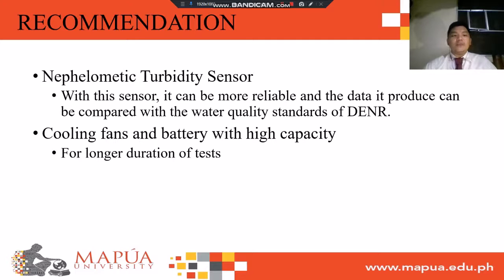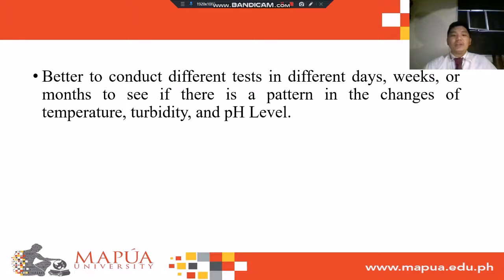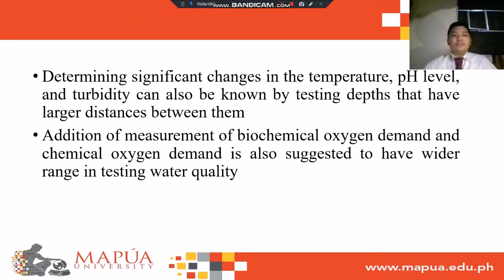For recommendations: a photometric turbidity sensor is recommended because it is more reliable and its data can be compared with DENR water quality standards in units of milligram per liter. Cooling fans and a battery with high capacity are also recommended for longer duration of tests, allowing testing across different days, weeks, or months to see if there is a pattern in water quality changes. Testing depths with larger distances between them would help identify significant changes in temperature, pH level, and turbidity. Addition of BOD and COD measurements is also suggested to have a wider range in testing water quality.